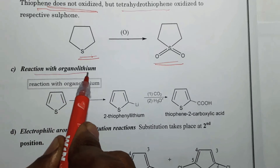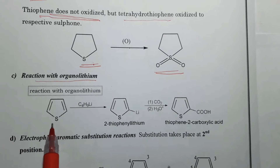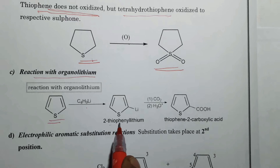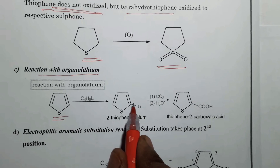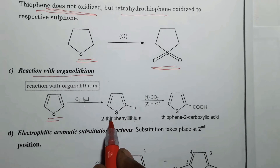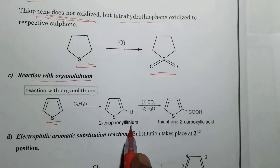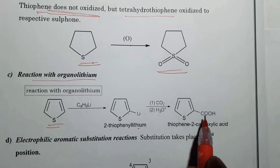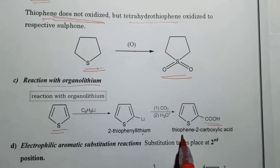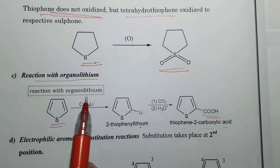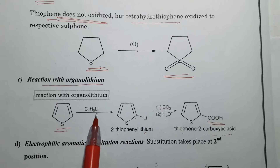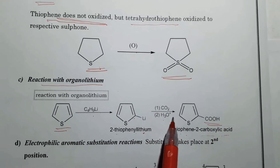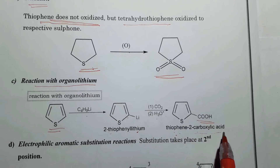Reaction with organolithium compounds: thiophene on reaction with n-butyl lithium gives 2-thiophenyl lithium, meaning the lithium is attached at the second position of the thiophene — also called thiophene-2-lithium. Further, on treatment with carbon dioxide followed by acidic hydrolysis, the lithium is replaced by a carboxylic acid group, finally giving thiophene-2-carboxylic acid.